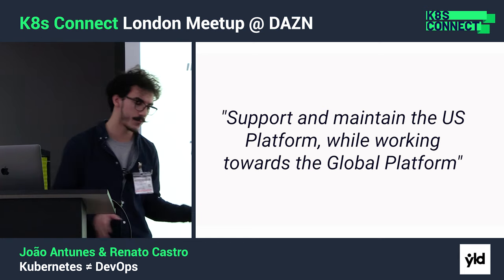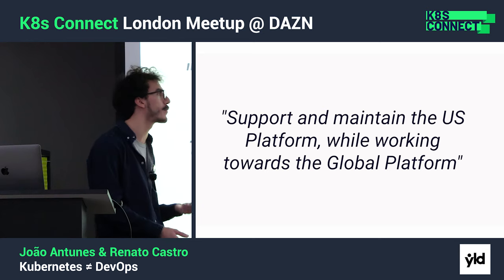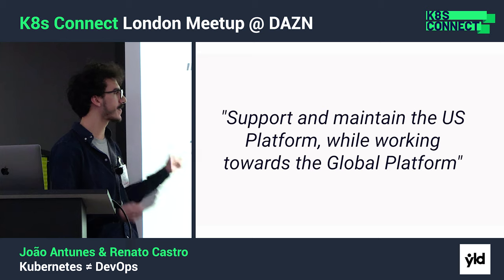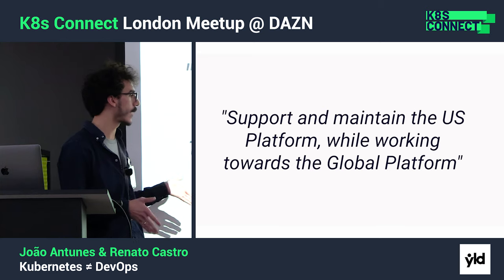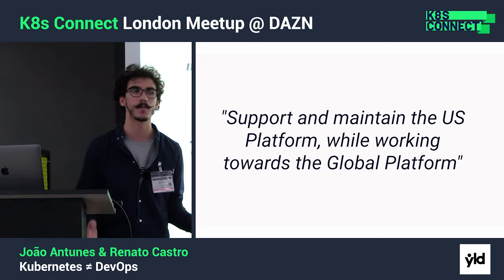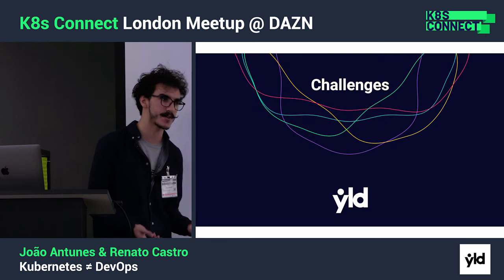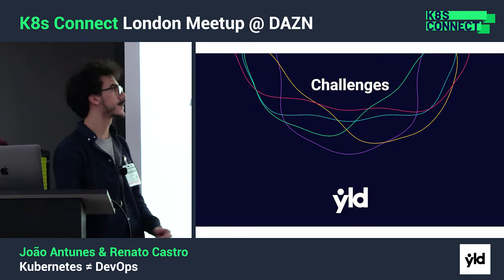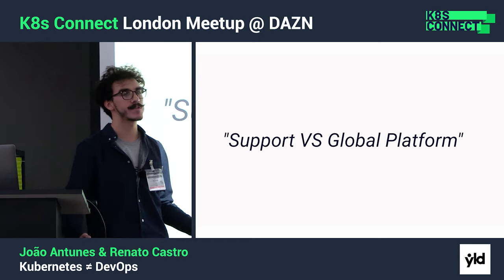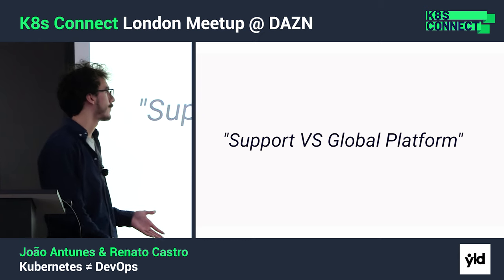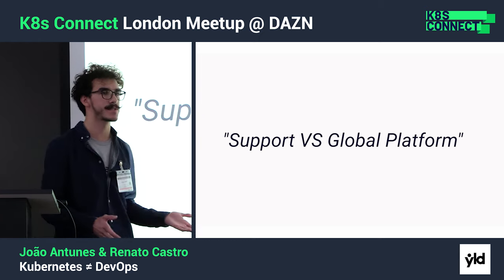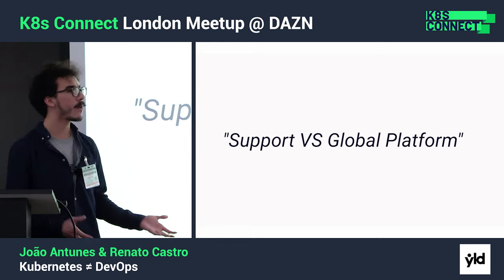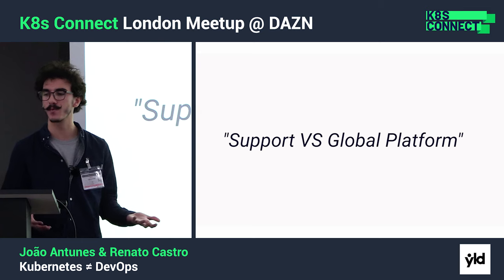So suddenly the focus of our engagement kind of changed. We were brought in to support and maintain the US platform, but now we need to do it while working towards the global platform. This has a set of challenges. We've highlighted a few to start with. The most obvious one is we need to support the existing platform but also move forward with the global platform. How can we balance this work?